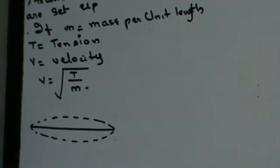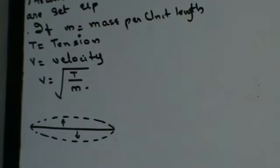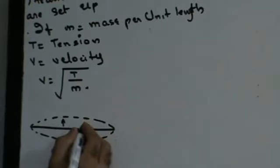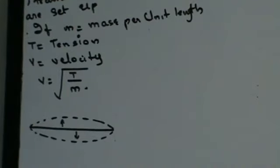The transverse waves are traveling in both directions. As the endpoints are fixed, there is no displacement possible at the endpoints. Therefore the two waves get reflected with a phase change of 180 degrees, interfere with each other with nodes at the fixed ends, and produce stationary waves. The frequency of vibration depends upon the number of nodes between the two fixed ends, and this determines the different modes of vibration.